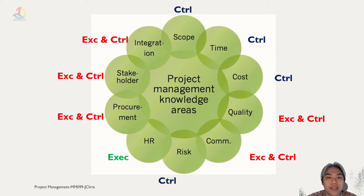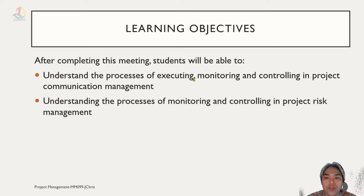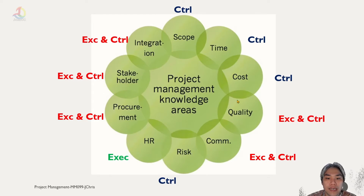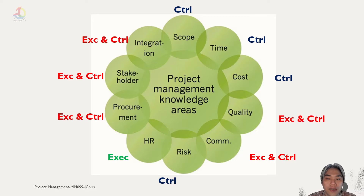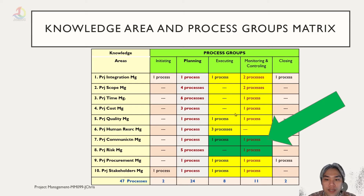Project management is divided into five process groups, starting from planning until finishing, and it intersects with project management knowledge areas. What we're going to talk about today in project communication management and project risk management is that communication management exists in execution and controlling groups, while risk management exists in the controlling group.